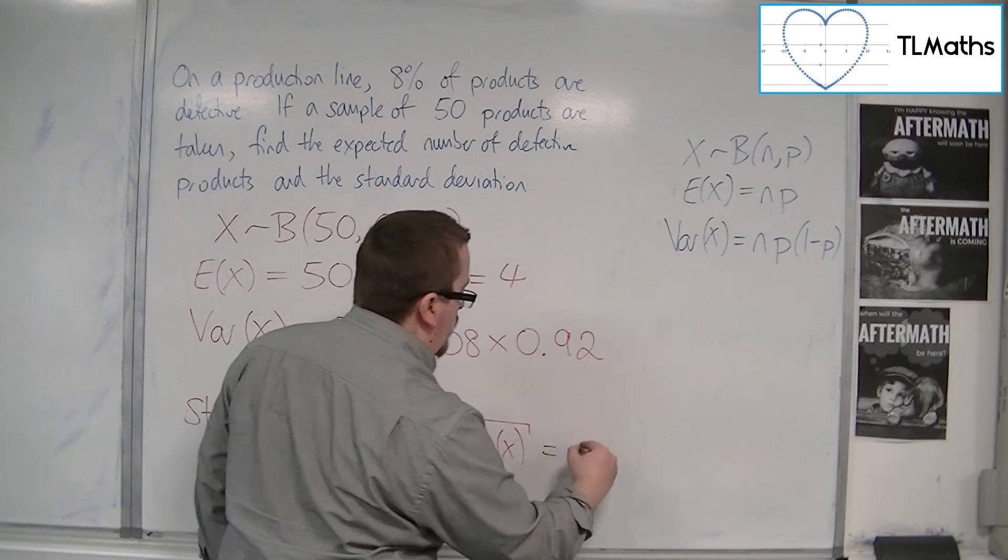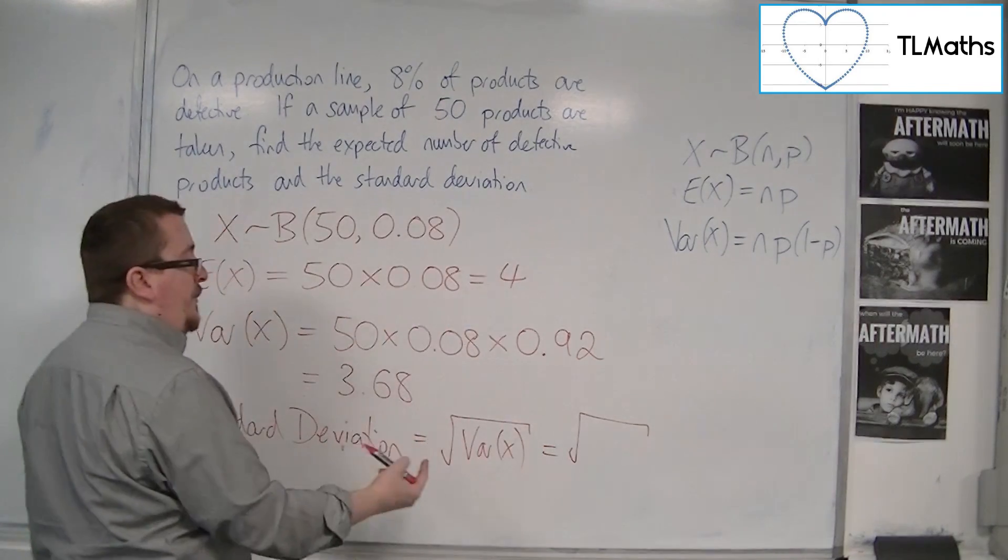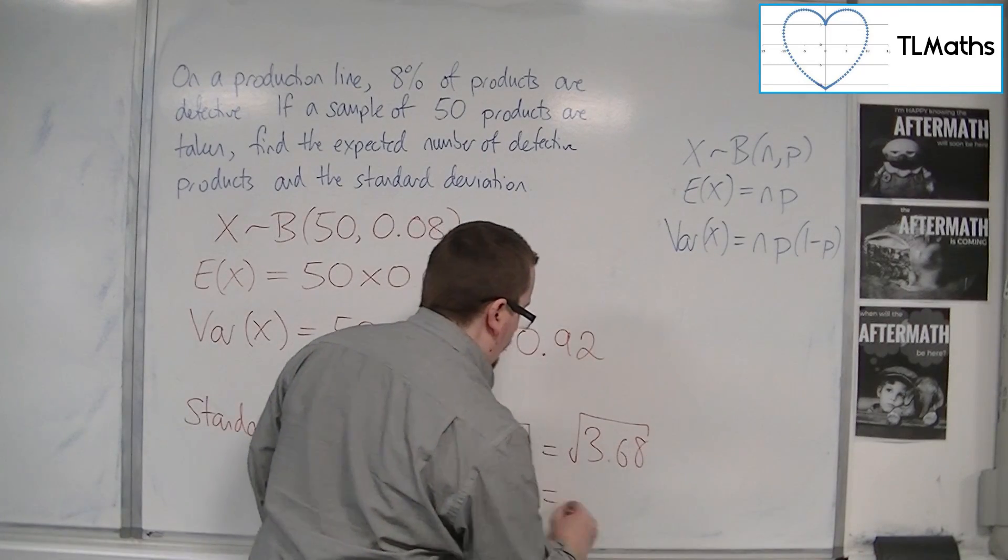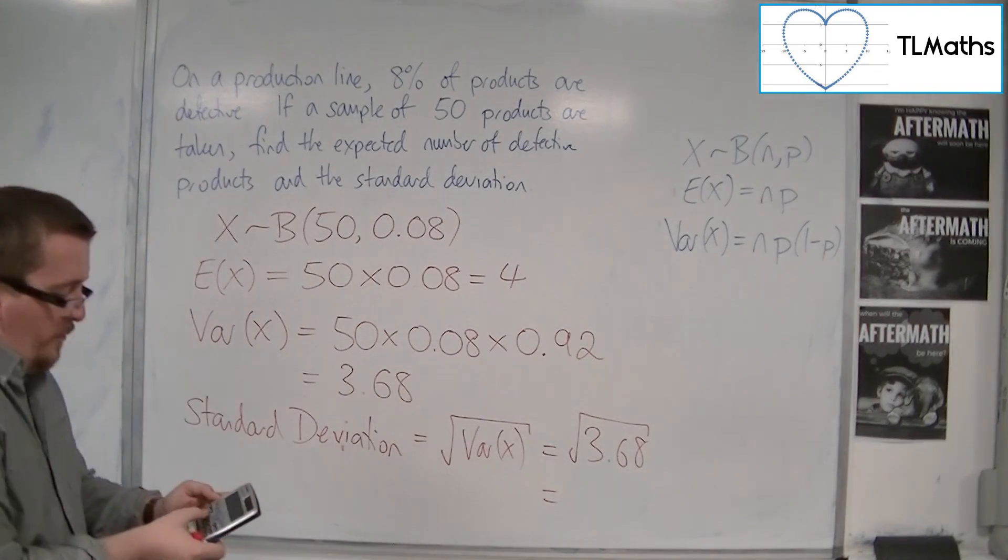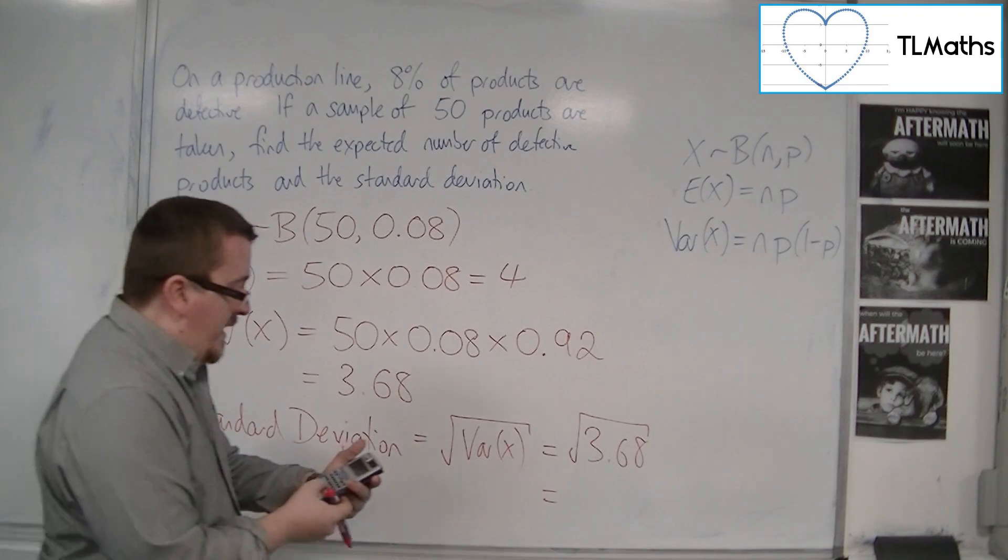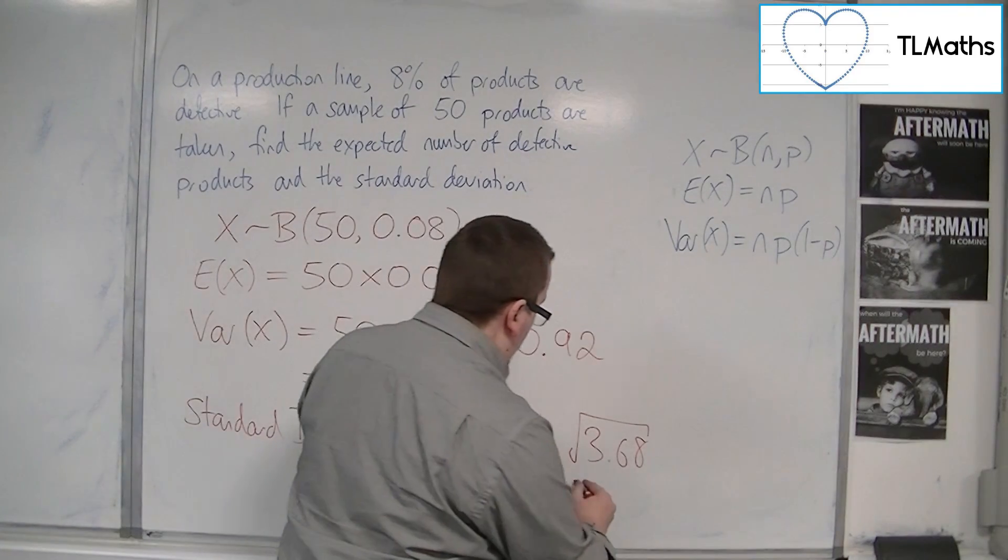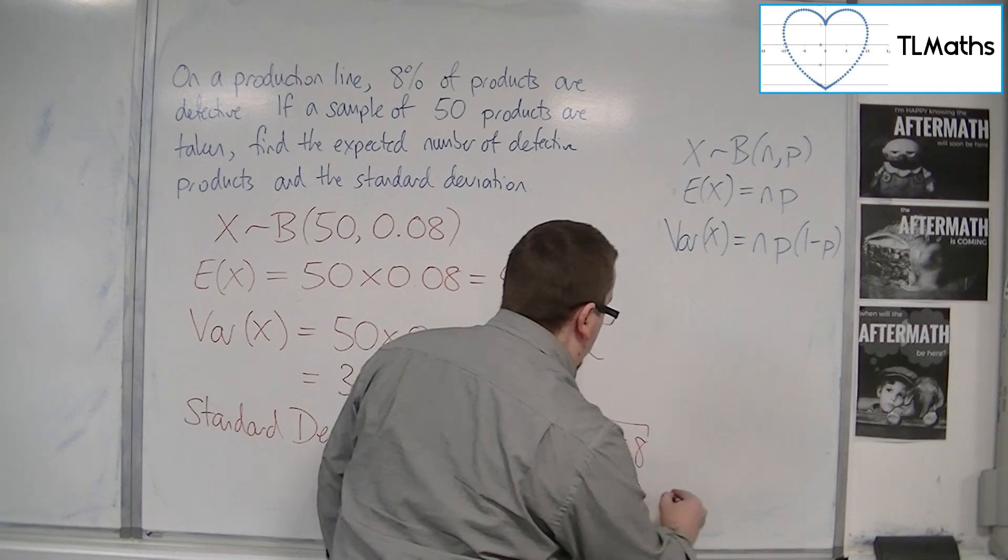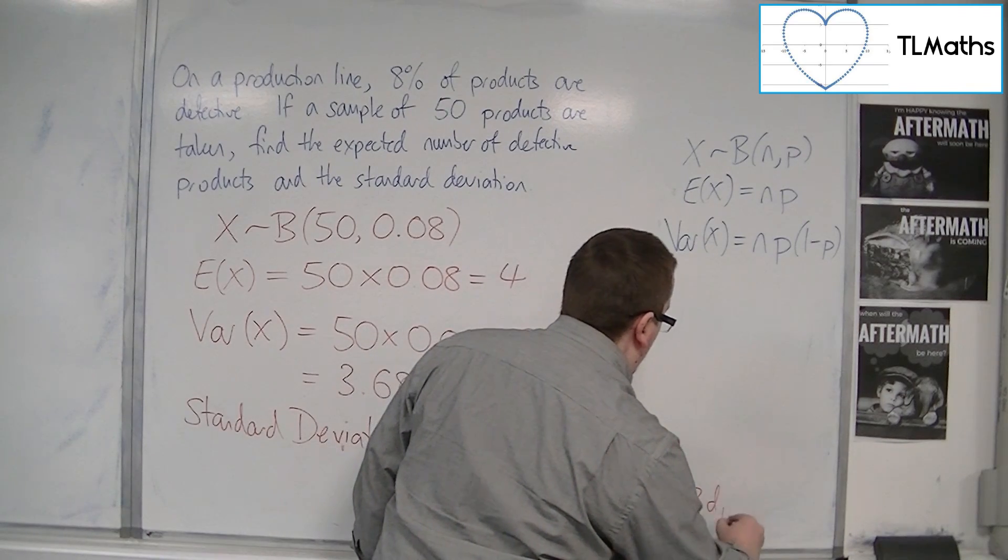So the square root of 3.68. And we get 1.918 to 3 decimal places.